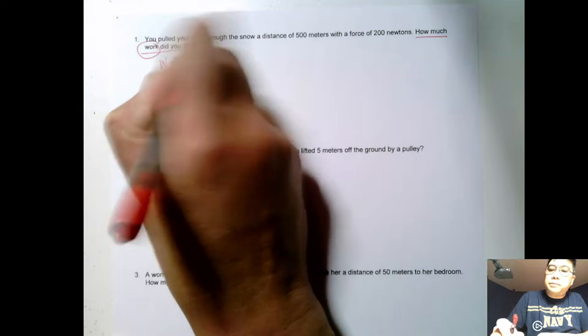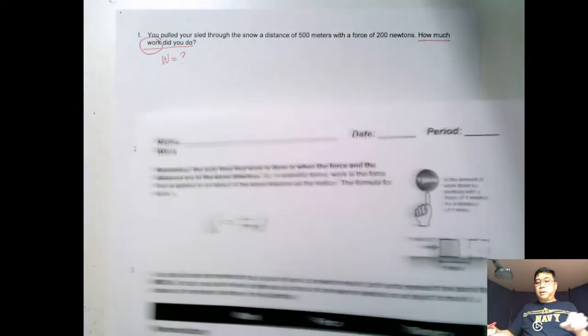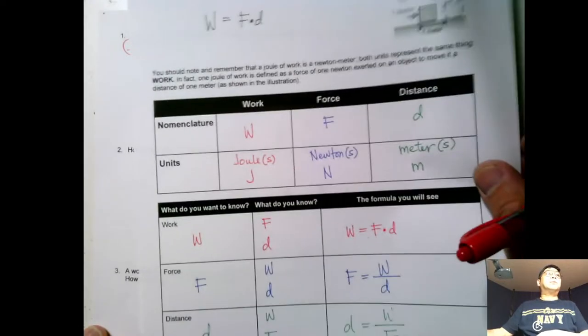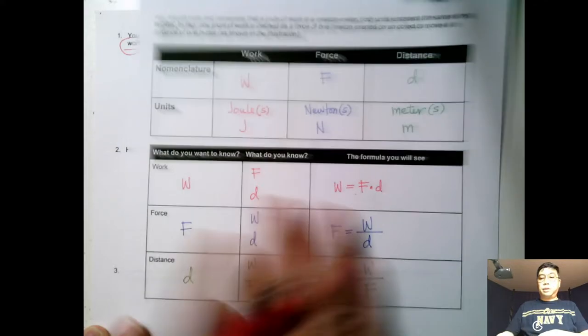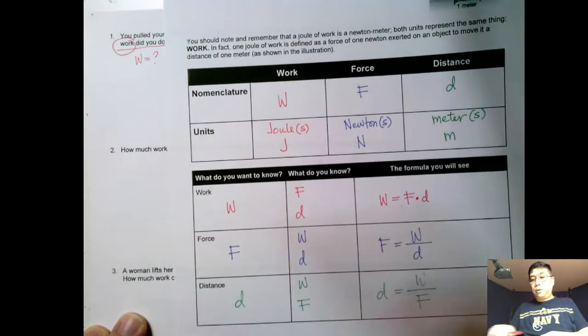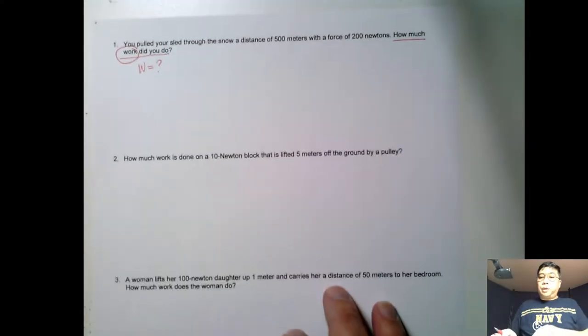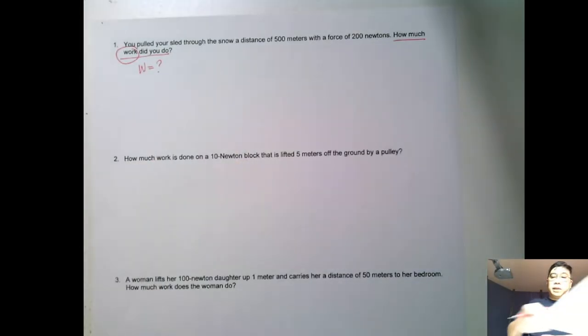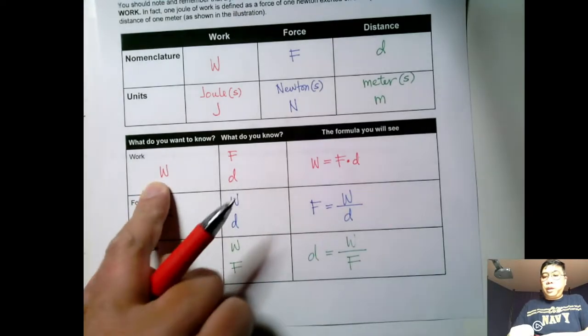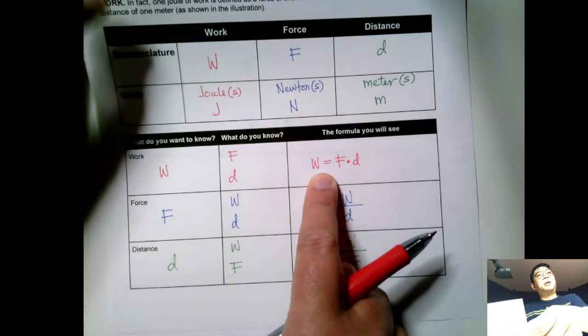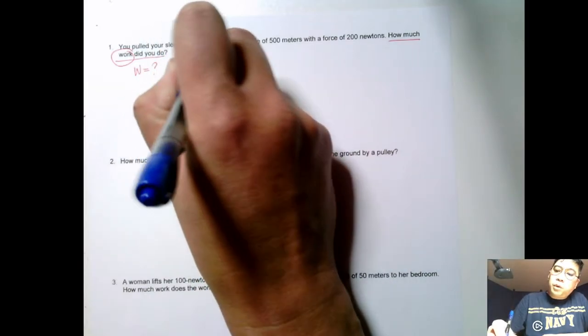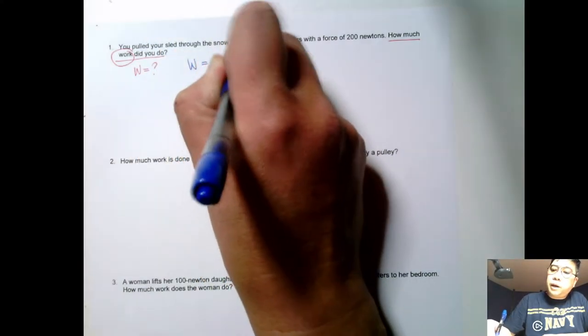We want to figure out what W is, so we go back to our notes. We're solving for work, so let's use the first row of our equation table. We need to know that there is force, there is distance, and we will use the equation: work equals force times distance.